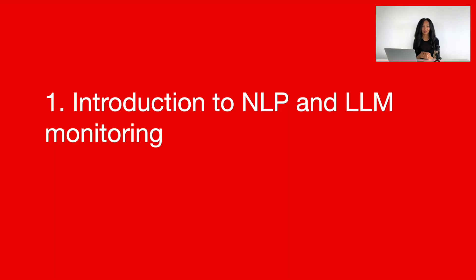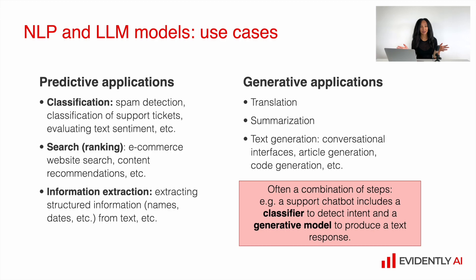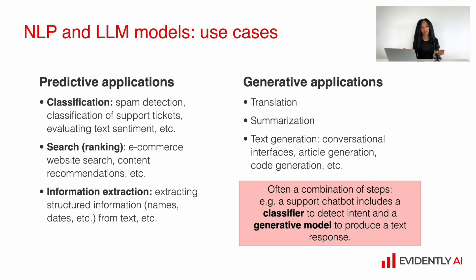Let me start with an introduction to natural language processing and large language models monitoring. I'd like to begin with some use cases which are widely used nowadays. First of all, we have a lot of predictive applications – for example, classification problems like email spam detection or classification for support tickets, evaluation of text sentiment, and many more. We also have ranking applications like e-commerce website search or content recommendations. There is also information extraction, like extracting structured data from raw texts such as places, dates, or specific names.